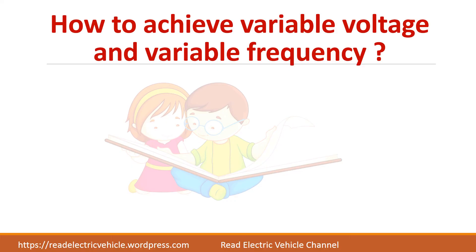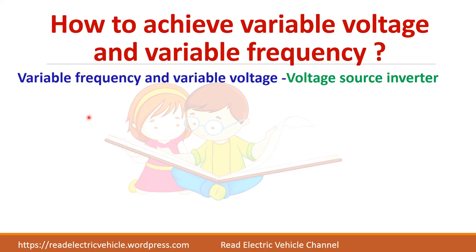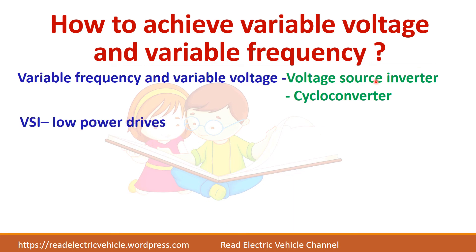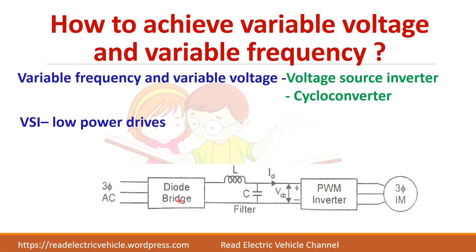To achieve variable voltage and variable frequency, you can use a voltage source inverter to change both voltage and frequency, or a cycloconverter. For a three-phase induction motor, a three-phase PWM inverter can be used. By changing the voltage and frequency of the inverter output, you can keep the V by F ratio constant. The inverter requires a DC supply from a diode bridge rectifier.